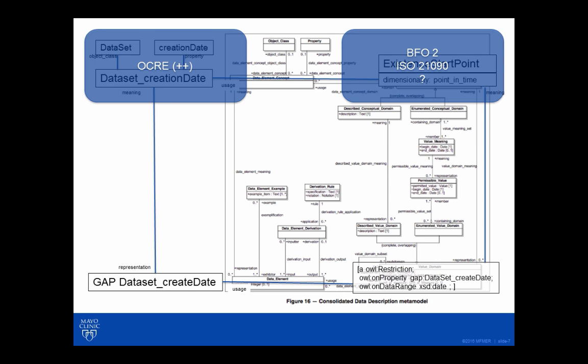For a quick upper-level view, I grabbed a variable — a dataset create date. Underneath the cover is the fact that it's about a data element called dataset creation date, where the object is the dataset and the property is creation date.